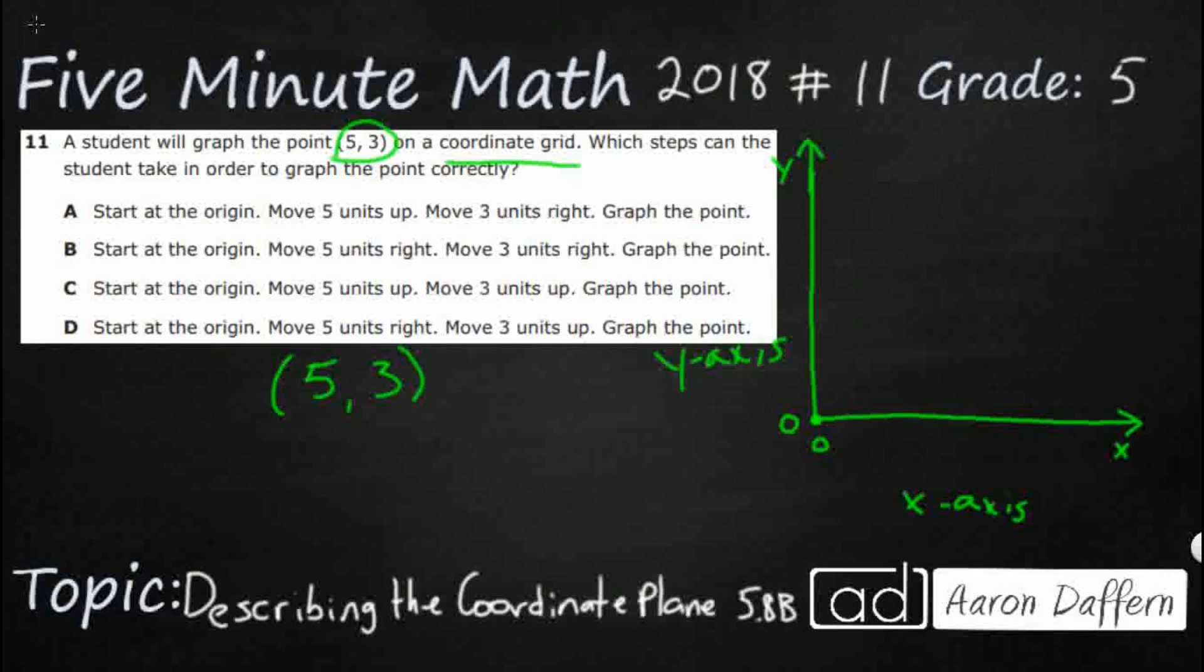Let's go ahead and get some points on here first. Let's label them: 1, 2, 3, 4, 5. And then 1, 2, 3, 4, 5. Five is the largest number we have so we don't really need to go past that.